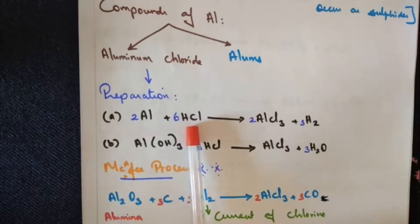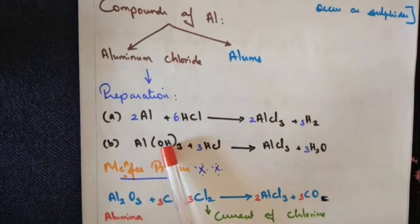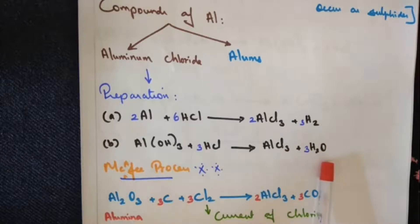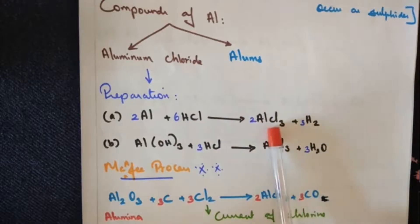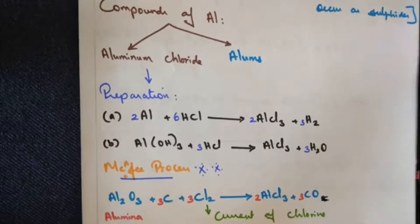Aluminium when you treat with hydrochloric acid, we get aluminium chloride and hydrogen is released. Aluminium hydroxide when you treat with HCl, we get aluminium chloride and water is released. Aluminium with HCl releases hydrogen, while aluminium hydroxide with HCl releases water after the formation of aluminium chloride.